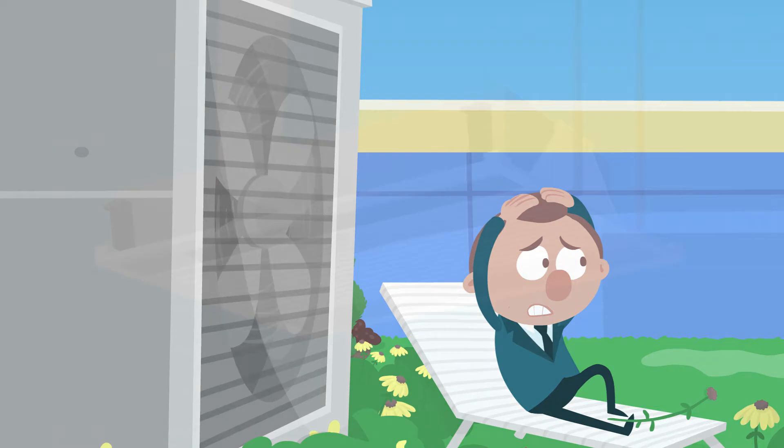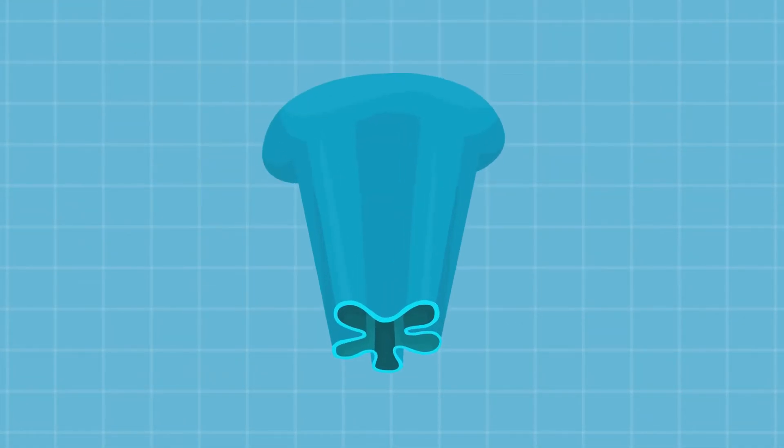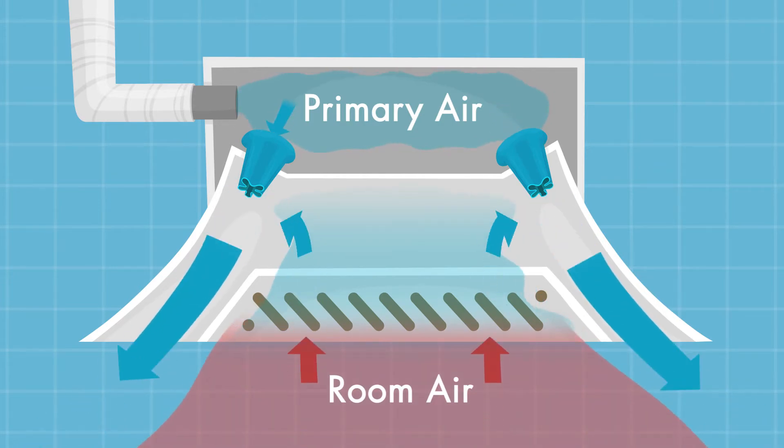At the heart of Dudenco's active beam is an ingenious nozzle design. As a small volume of primary air is discharged here via the nozzles, a large volume of room air is induced across the heat exchanger coil.